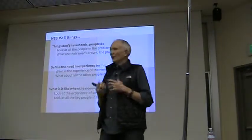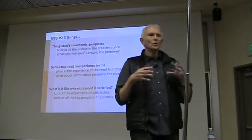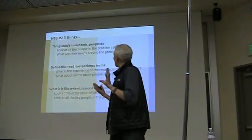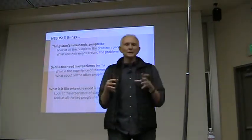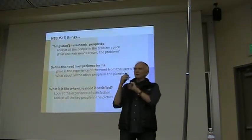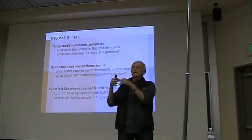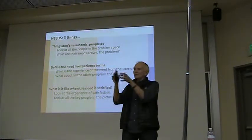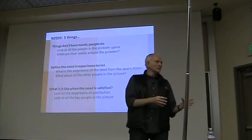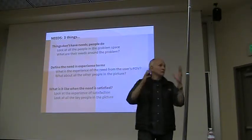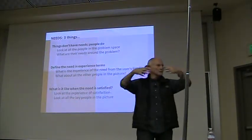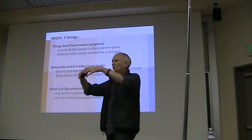We want to look at who are the people in the problem space and what are their needs. The product or device has a user — maybe your grandmother — and that's simple enough. But most devices will involve a whole network of people: somebody has to build it, somebody has to sell it, somebody has to maintain it, there may be caregivers. Each person in that network has a sort of need. Understanding what the product manager needs for the product to be a success is different from what the actual user needs, which is different from what the builder needs.